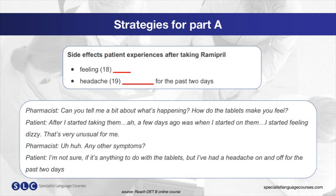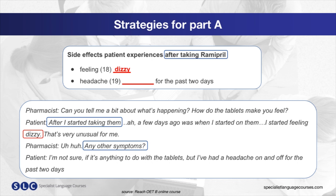So if we look at the answers, we can see that number 18 is 'dizzy.' The headings there help guide us towards the answer. For question 19, we are guided again — the pharmacist indicates that the answer is about to be said by asking if there are any other symptoms.